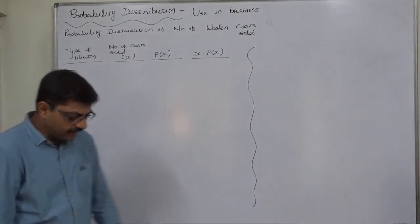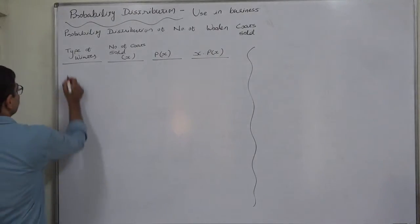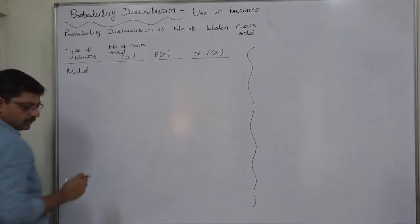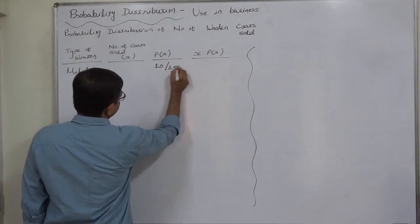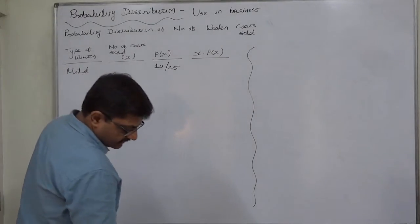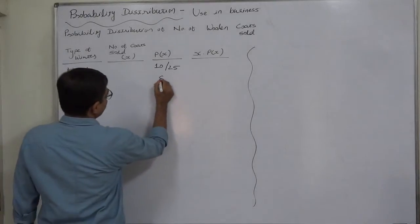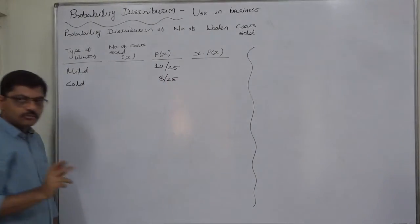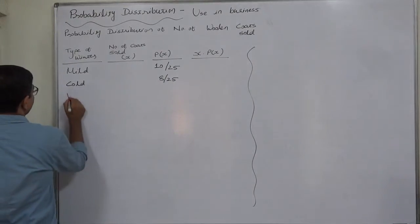A survey conducted over the last 25 years indicated that in 10 years the winter was mild, so the probability of a mild winter is 10 out of 25. In 8 years it was cold, so the probability of a cold winter is 8 out of 25.